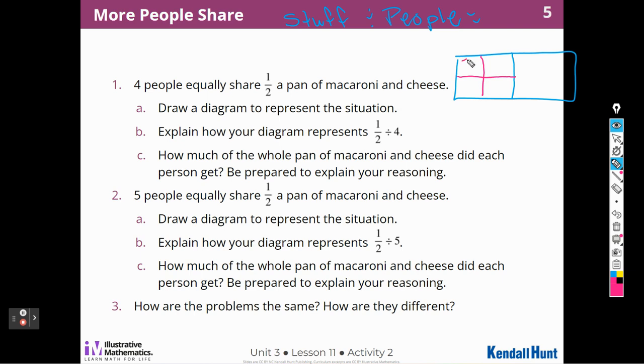This is my piece. Explain how your diagram represents one half divided by four. Well, here's the one half, and here's the four pieces. How much of the whole pan did each person get? Remember, now I have to do the whole pan, so that means I have to cut this side into four pieces as well. And now we have one, two, three, four, five, six, seven, eight. So each person is going to get one-eighth of the whole pan.